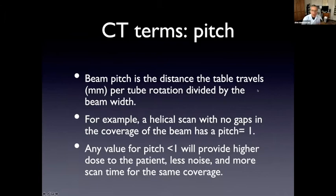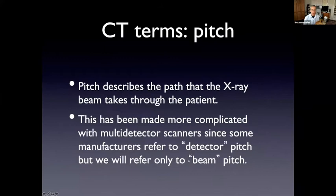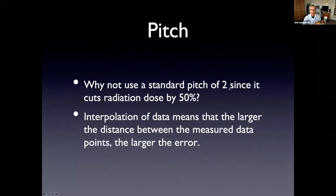So any value less than one is going to provide a higher dose to the patient, but it's going to require more scan time for the same coverage, but you'll have less noise in the image. So these are the compromises you make when you're designing the imaging protocols. If your goal is to have lowest possible scan time, then you're going to go to a higher pitch. If you want to decrease noise, you have to go to a lower pitch. So these are all compromises that you make when you decide pitch.